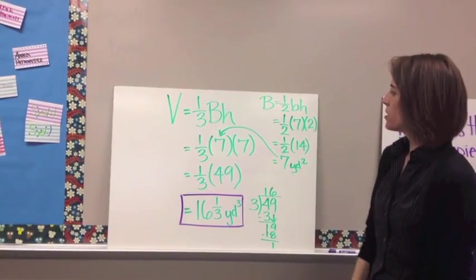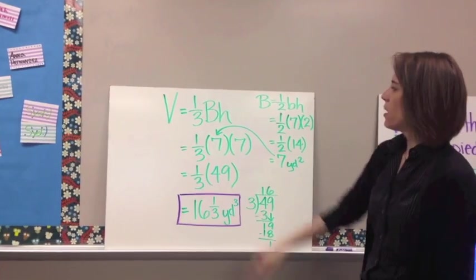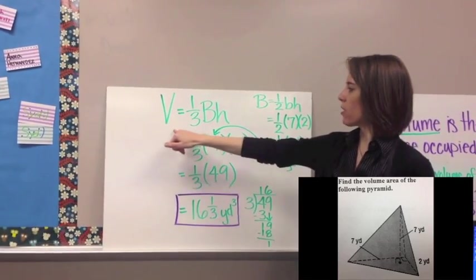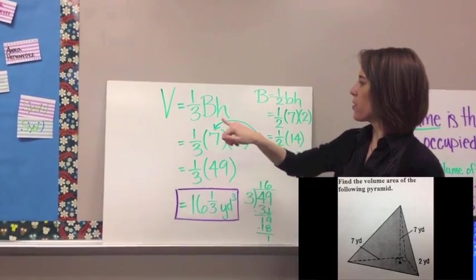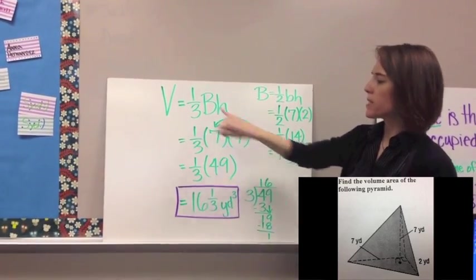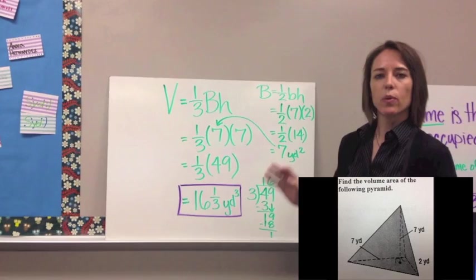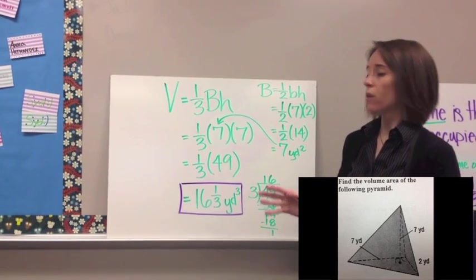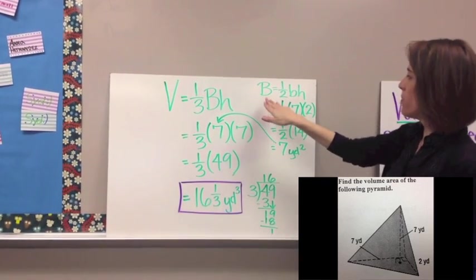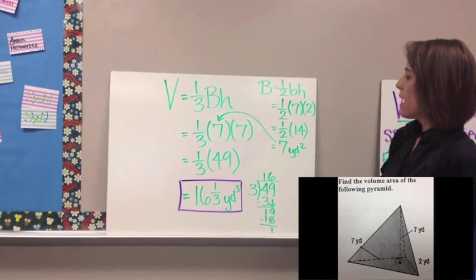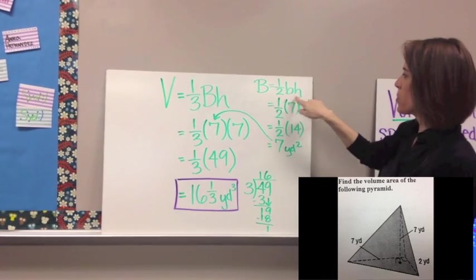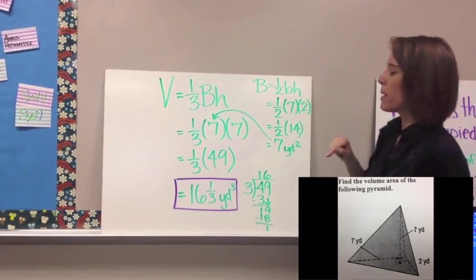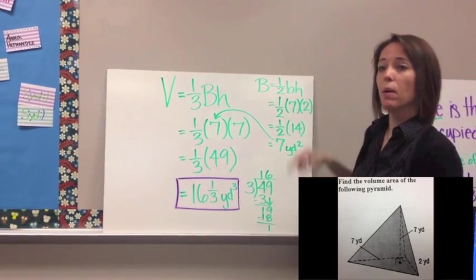Here's the solution to example number 2. You always want to start with your formula: V = (1/3) × area of the base × height. The first thing I suggest is to come over and find the area of the base first. The base is a triangle, so we're going to use the formula: (1/2) × base × height.